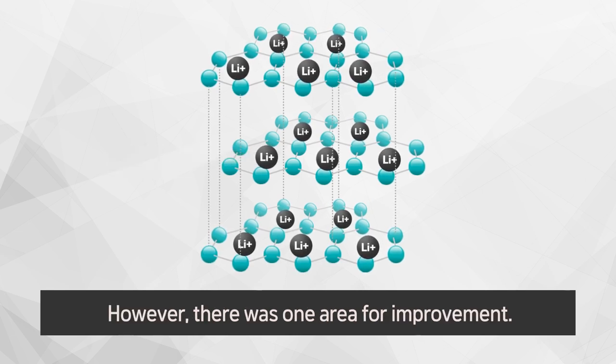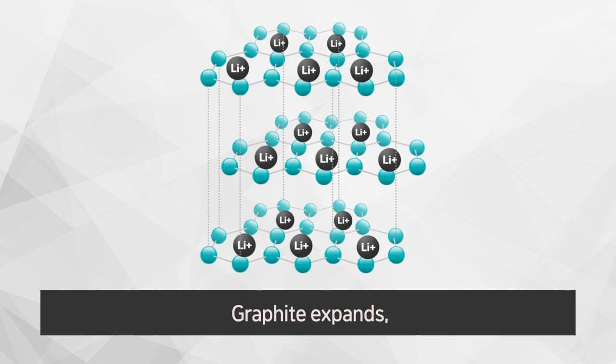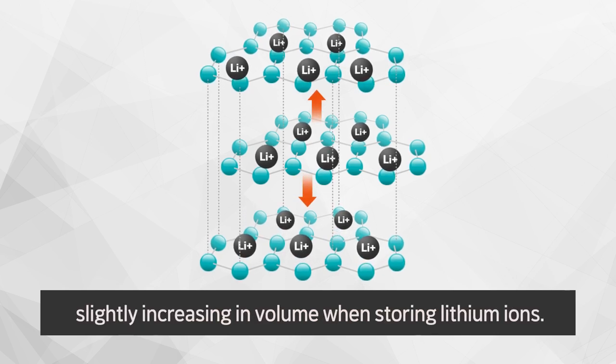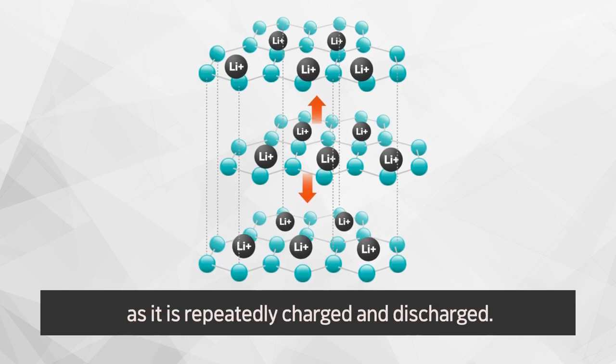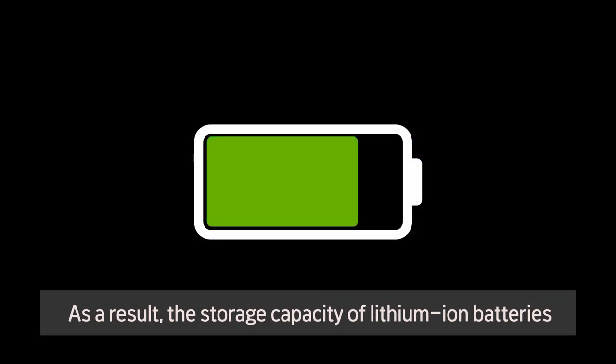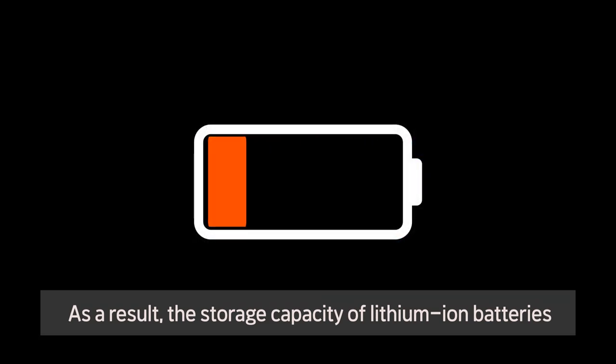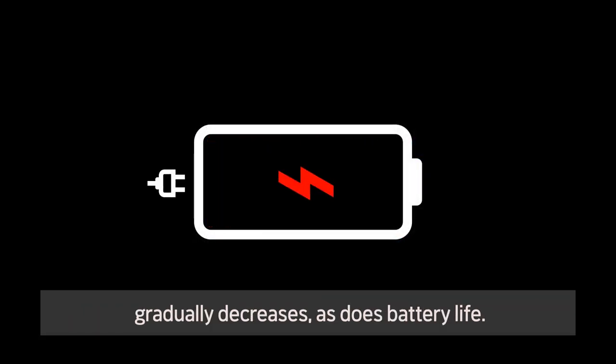However, there was one area for improvement. Graphite expands, slightly increasing in volume when storing lithium ions. The structure of the battery gradually changes as it is repeatedly charged and discharged. As a result, the storage capacity of lithium-ion batteries gradually decreases, as does battery life.